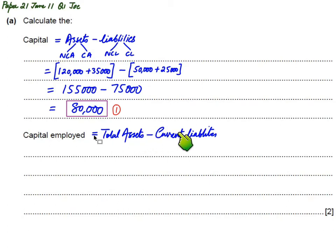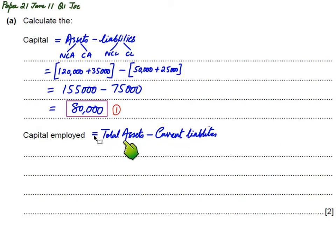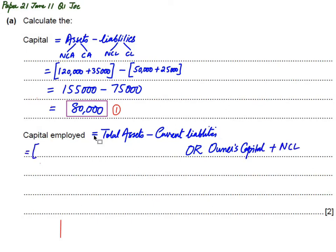If I deduct total liabilities from total assets I get owners capital. But for capital employed, I deduct current liabilities only — not non-current liabilities — because I need to keep non-current liabilities included. So instead of deducting total liabilities from total assets, I deduct current liabilities only.